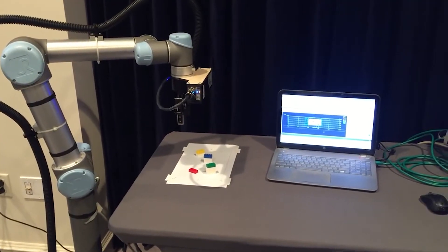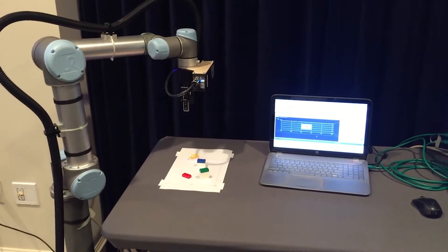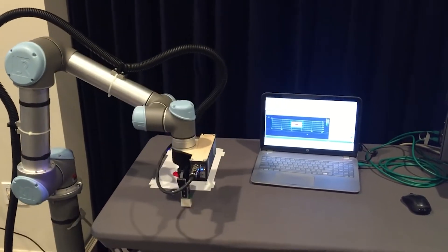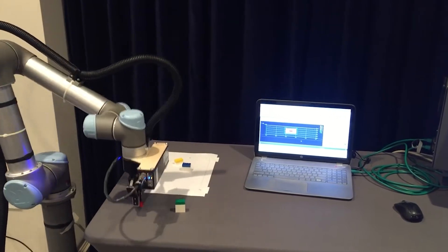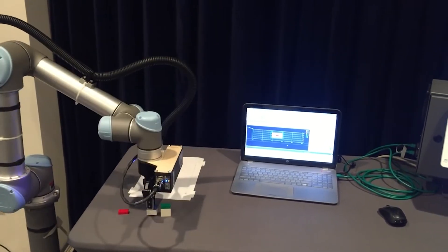After hand-eye calibration is complete, you can program the robot to connect to the sensor, load a job on the sensor, trigger a scan, and return positional measurements in the X, Y, and Z axes.